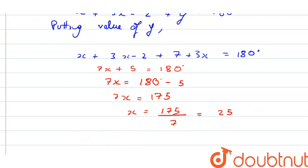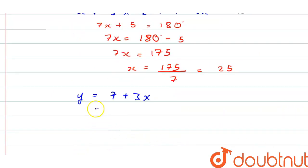So y we have as 7 plus 3x. Now we have value of x as 25. So if we put the value 7 plus 3 into 25, we will get 82.